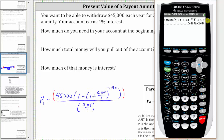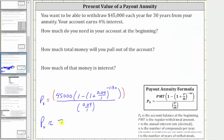To the nearest cent we have $778,141.50. So now we know you need $778,141.50 in your account at the beginning.